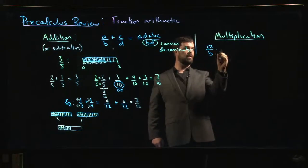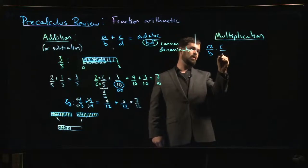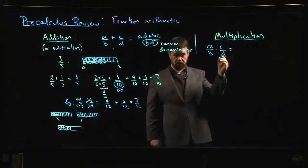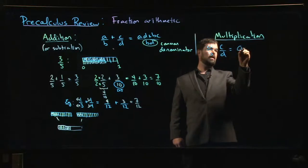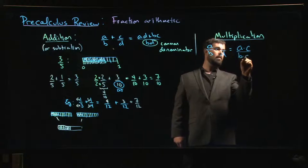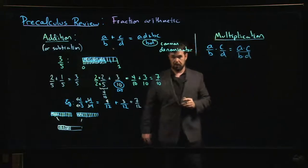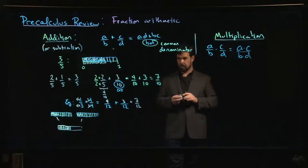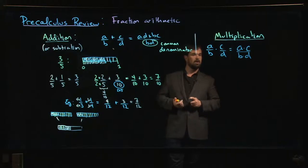So if I were to give you a formula, it might look something like this: a over b multiplied by c over d. I'm just going to do a times c divided by b times d. Okay, that's the rule for multiplication.